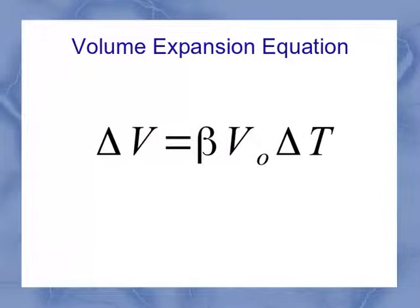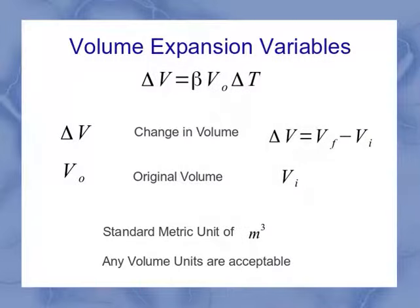The next equation that we're going to take a look at is the volume expansion equation. You'll notice it's very similar to the linear expansion. In this case, however, we're doing a change in volume and the original volume. And those are going to have our metric units of meters cubed. Sometimes we're going to run into liters, gallons, other things. Again, as long as you've got the same volume for the V0 and for the delta V, you're going to be OK in your equations.